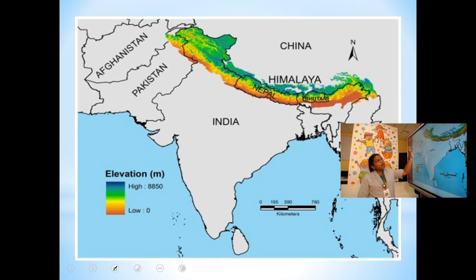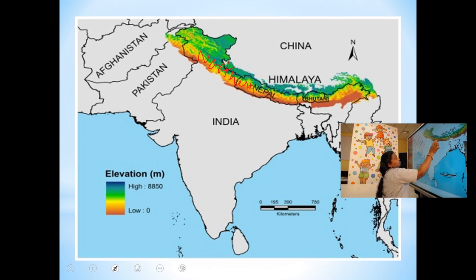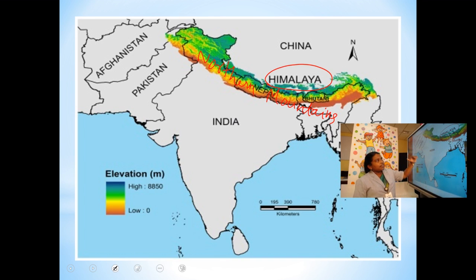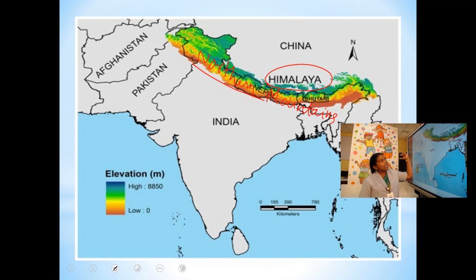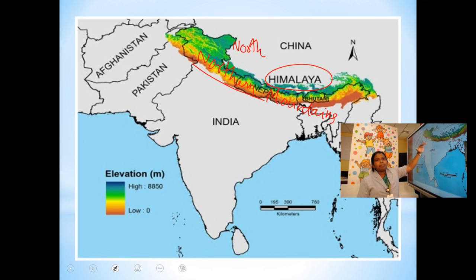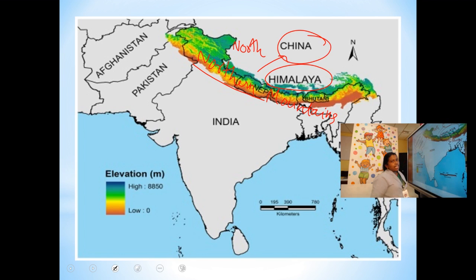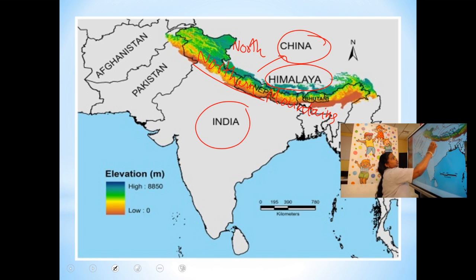Now we are going to study about the northern mountains. The northern mountains, also called the Himalayas, exist in the extreme northern part of India — that is why they are called the northern mountains. The northern mountains or Himalayas act as a natural barrier.